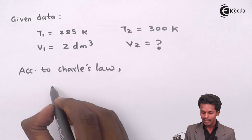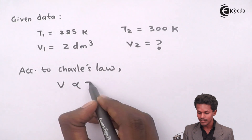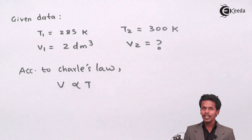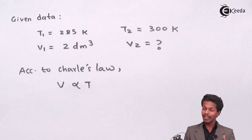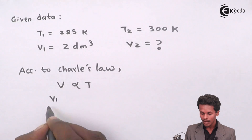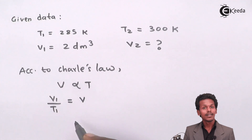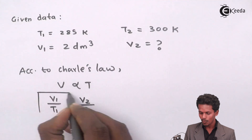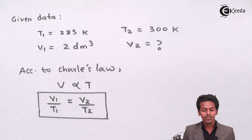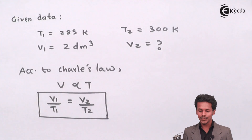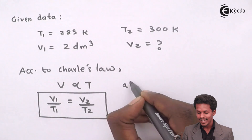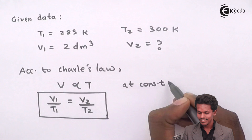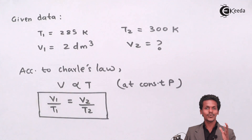According to Charles Law, the volume of a gas increases if the temperature is increased — so volume is directly proportional to temperature. For two states with volumes V1 and V2 at temperatures T1 and T2, the formula is: V1/T1 = V2/T2, at constant pressure. Always mention 'at constant pressure' so you don't lose marks.